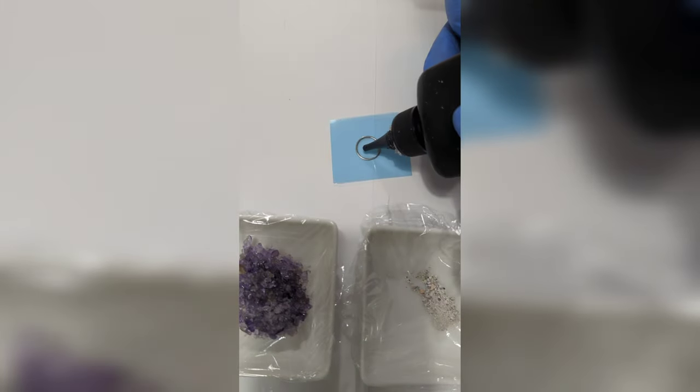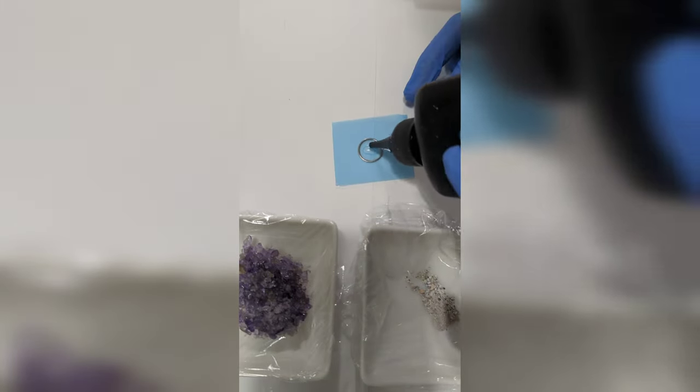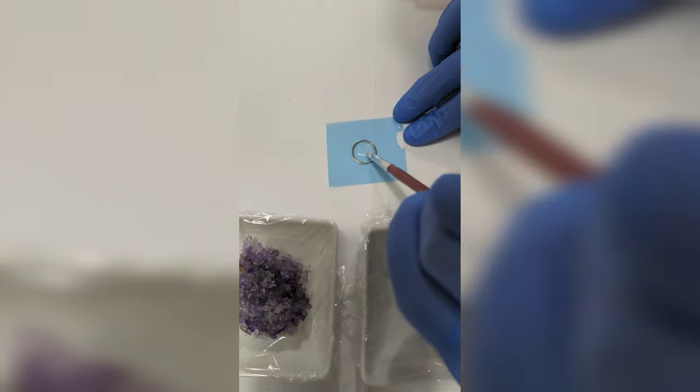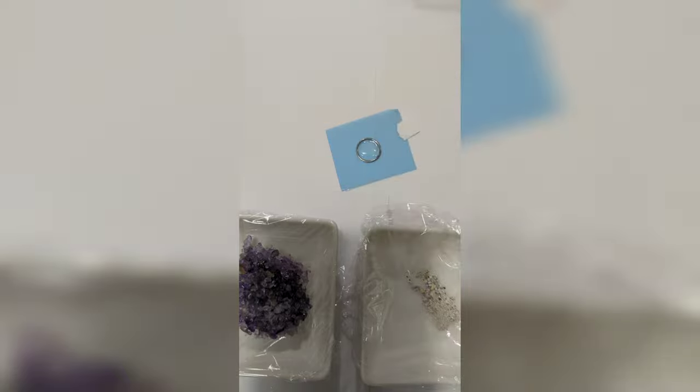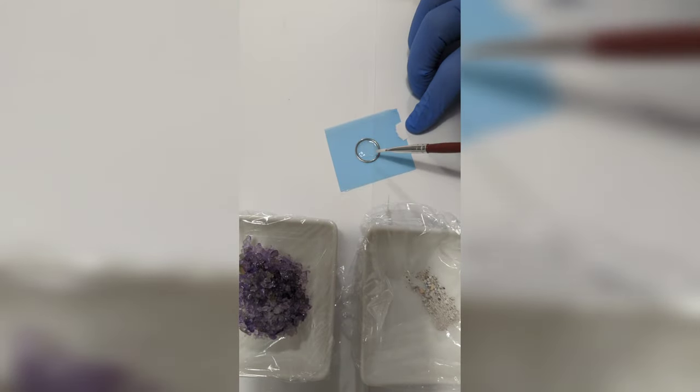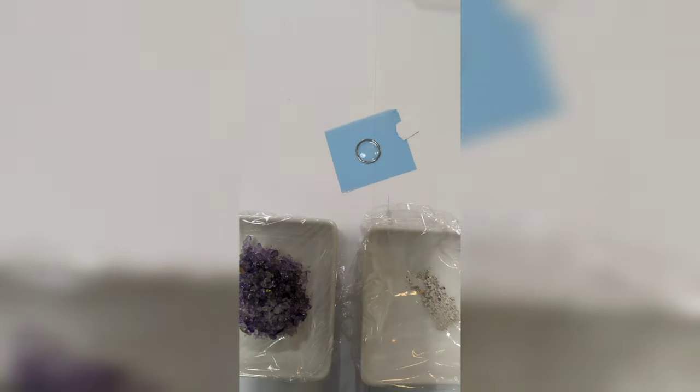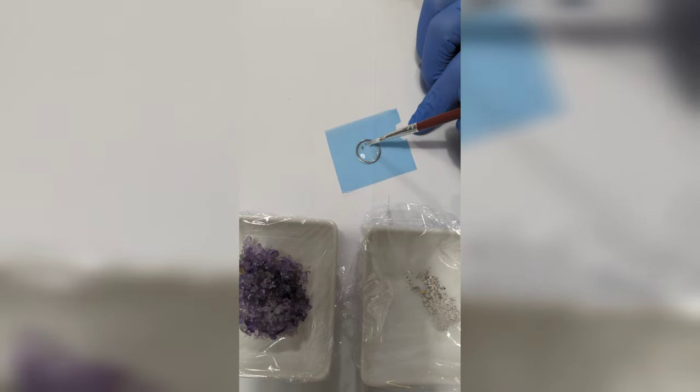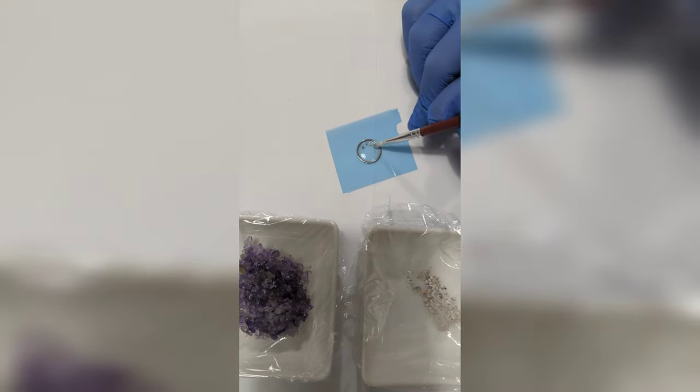Again just adding another layer of resin and smoothing it out with my paintbrush, making sure there's no bubbles. I'm going to take the ashes little by little and I'm creating a nice swirl.